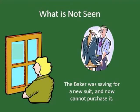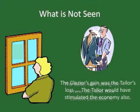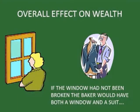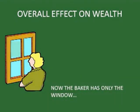But what is not seen is that the baker was saving for a new suit and now cannot afford to purchase it. The glazier's gain seems to be the tailor's loss, and his plans for spending his money acquired from the sale of the suit need to be cancelled. All that has changed is who received the $200 from the baker. From the baker's point of view, if the window had not been broken, he would have both a window and a new suit. Now he has only the window. The overall wealth of the economy is $200 less. Punish the vandal.